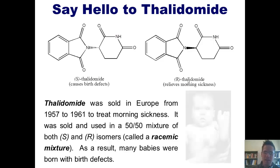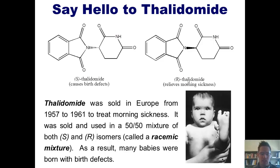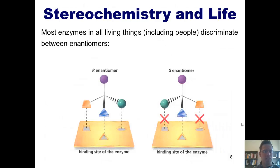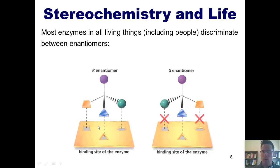As a result, many babies were born with birth defects — the birth defect caused by S-thalidomide is malformed limbs. So the question is: does the three-dimensional shape of a molecule actually matter when the molecule is being used as a medicine? Of course the answer is yes. Most enzymes in all living things, including people, discriminate between enantiomers. The reason is because most enzymes have very specific three-dimensional shapes. Thus, one enantiomer might react with one enzyme in one way, while the opposite enantiomer will react in a completely different way. This is why, when we have medicines that possess stereocenters, it is often crucial to assemble them in a way that only gives us one enantiomer and not the other.